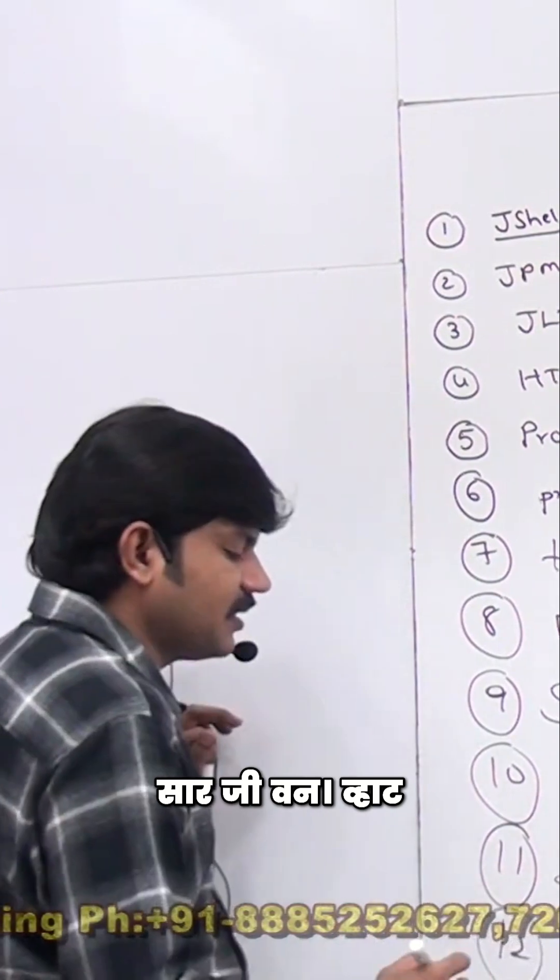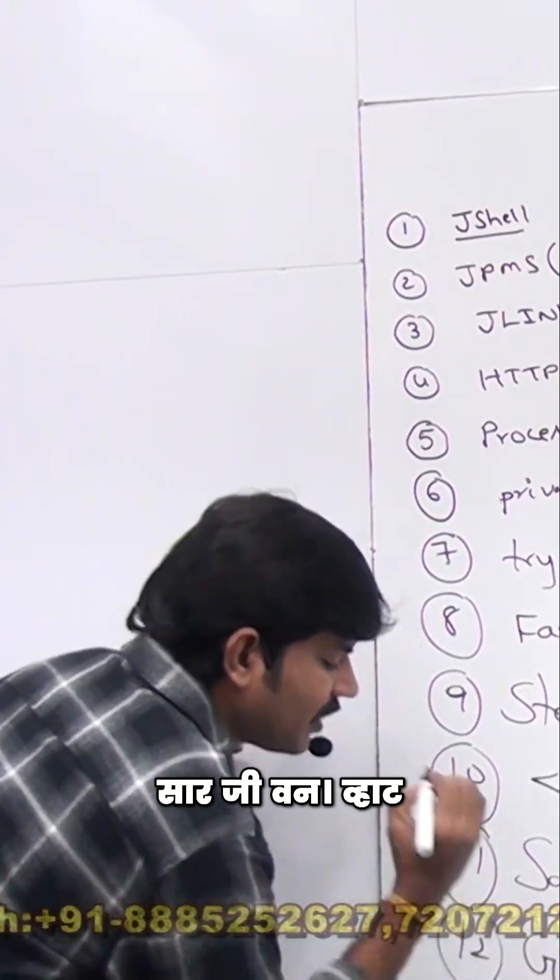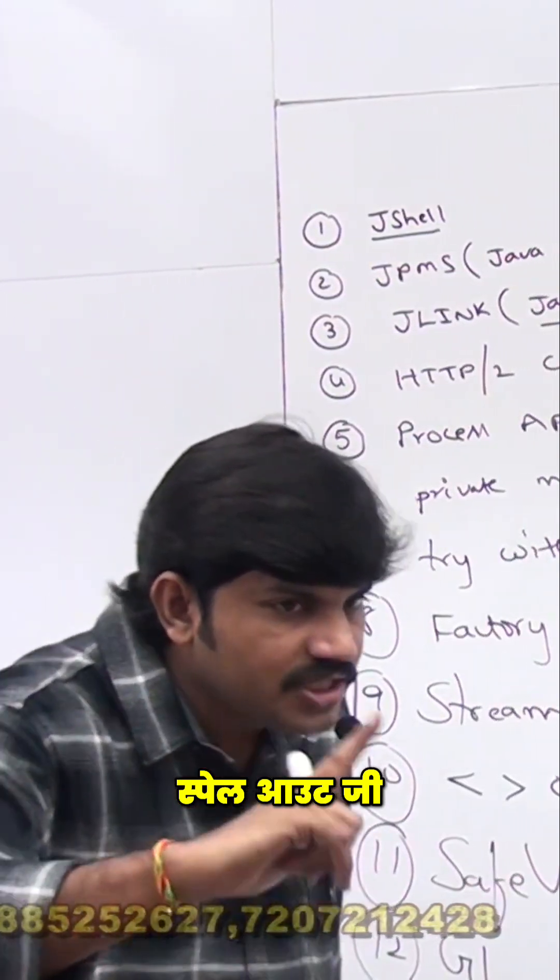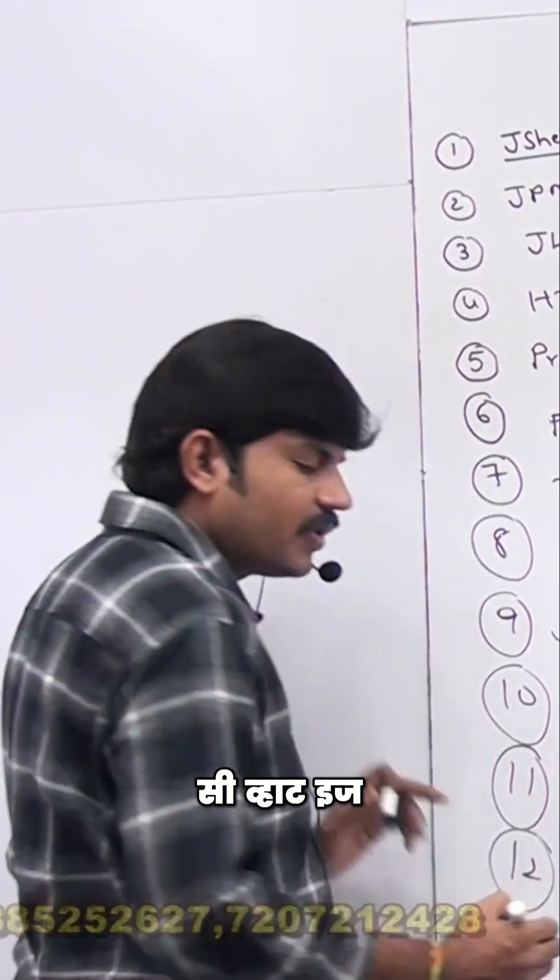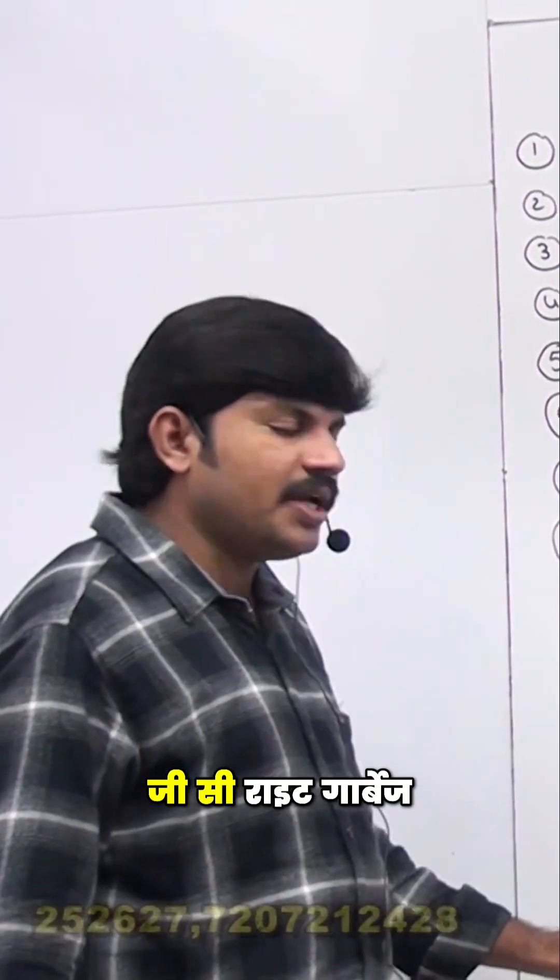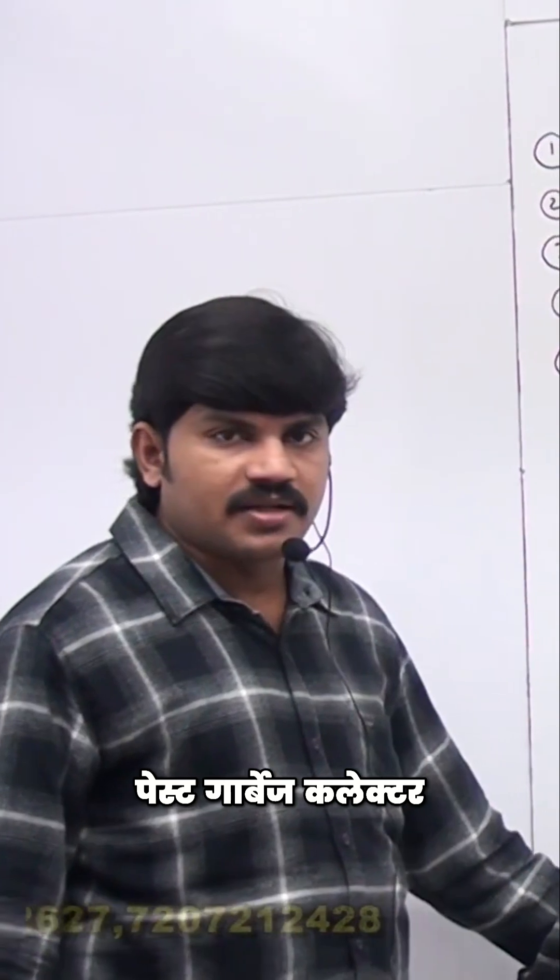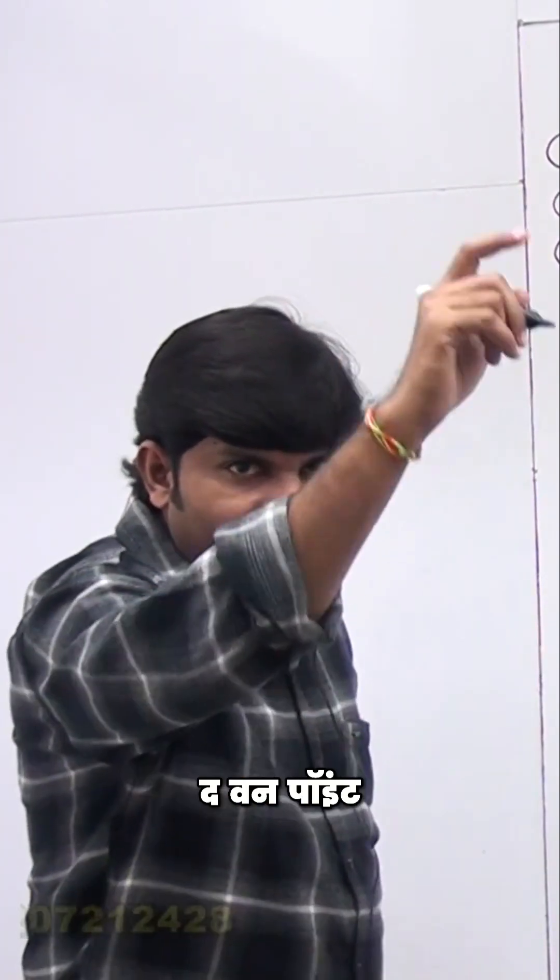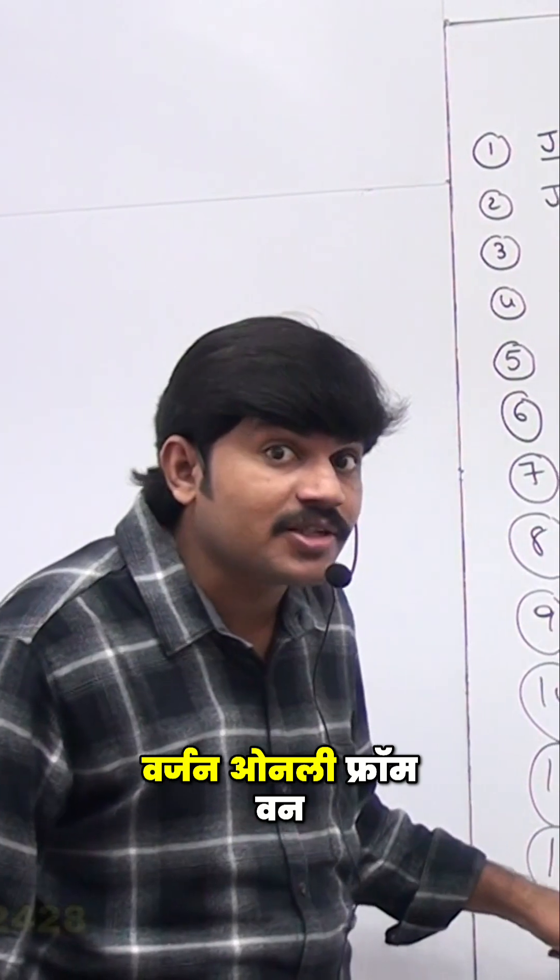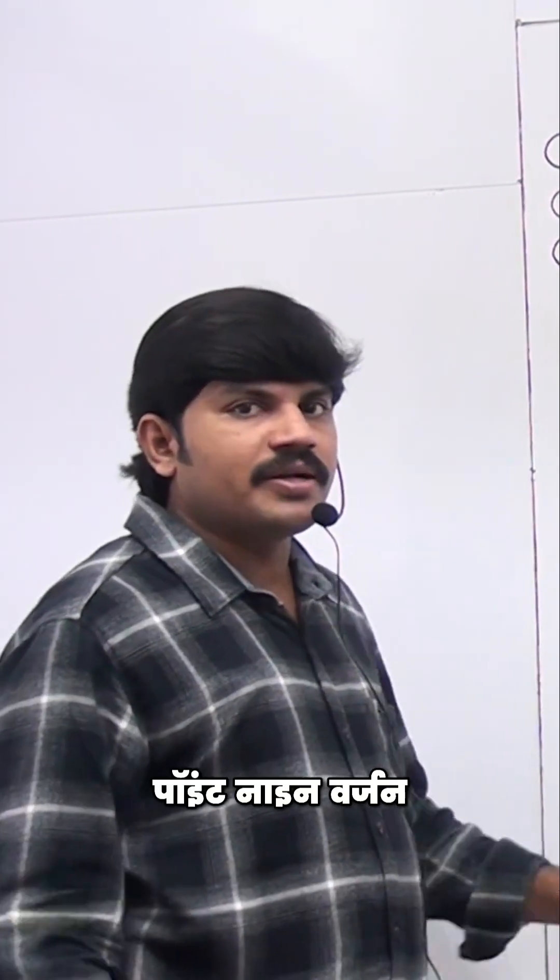Next, sir, G1. What is that? Can you spell out G1 GC? What is that? G1 GC, right? Garbage First Garbage Collector. Garbage First Garbage Collector, which came in the 1.6 version only. From 1.9 version onwards, it is the default garbage collector, right? That part I will take care.